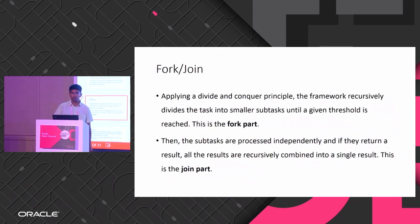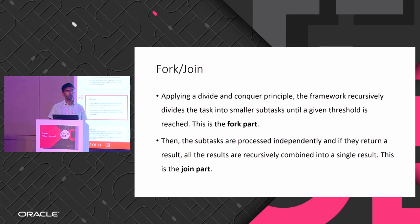There are two parts: fork and join. In fork, you divide the task into smaller subtasks. Join is where you combine the results — you wait for the result and then combine it. This is similar to MapReduce.